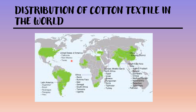Cotton textiles are mainly manufactured in the USA, especially in the eastern part where the climate is very mild, cotton is grown in large amounts, and the mills are situated in the northeastern part. The mild climate helps the thread not to break while being woven. The UK, China, India, Russia, Japan, Brazil, France, Spain, Italy and Egypt are the most important cotton textile manufacturing countries of the world.